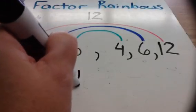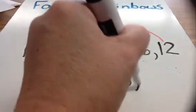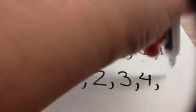So now I can say that all of the factors of 12 are 1, 2, 3, 4, 6, and 12.